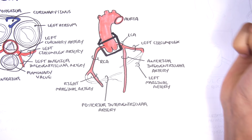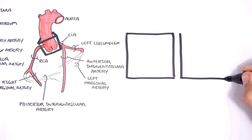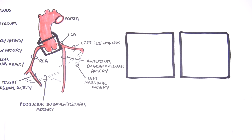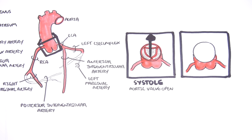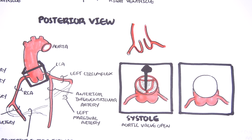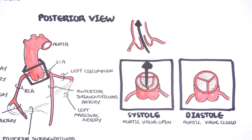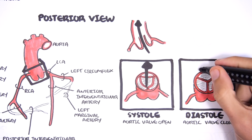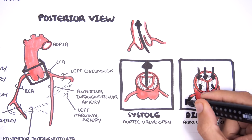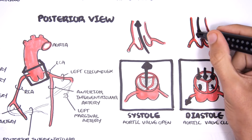So how do the coronary arteries give oxygen to the heart muscle cells? In order to understand this we have to learn about the two important phases of the heart: systole and diastole. In systole the ventricles are contracting, ejecting blood out of the heart — the aortic valve is open. It is actually in diastole when the aortic valves are closed that blood flows down through the coronary arteries and supplies the heart muscle with oxygen for energy.